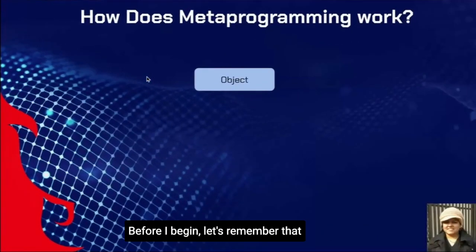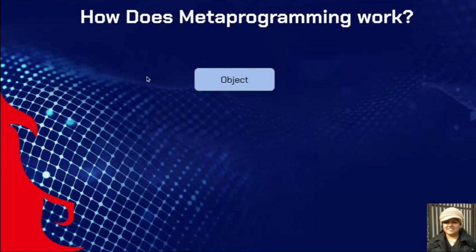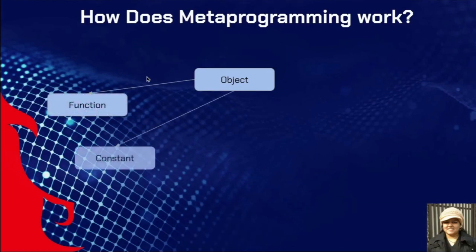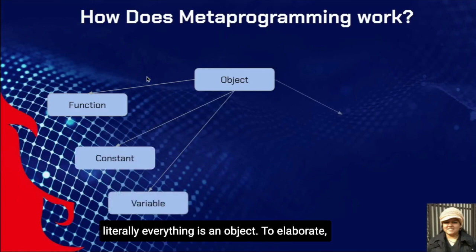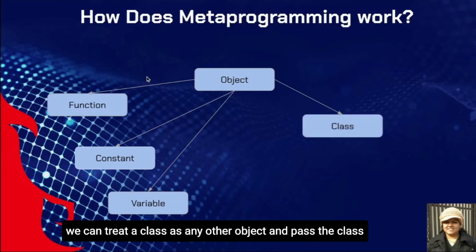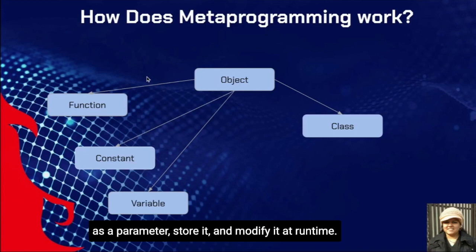Before I begin, let's remember that everything is an object in Python — a function, a constant, a variable, literally everything is an object. To elaborate, even a class is an object. As a result, we can treat a class as any other object and pass it as a parameter, store it, and modify it at runtime.